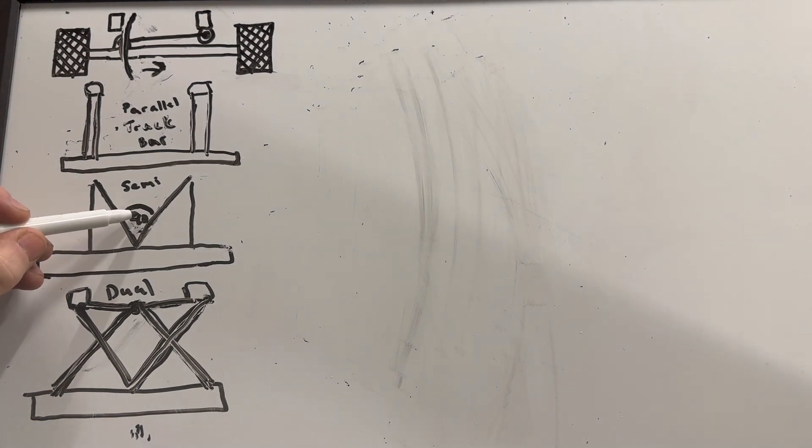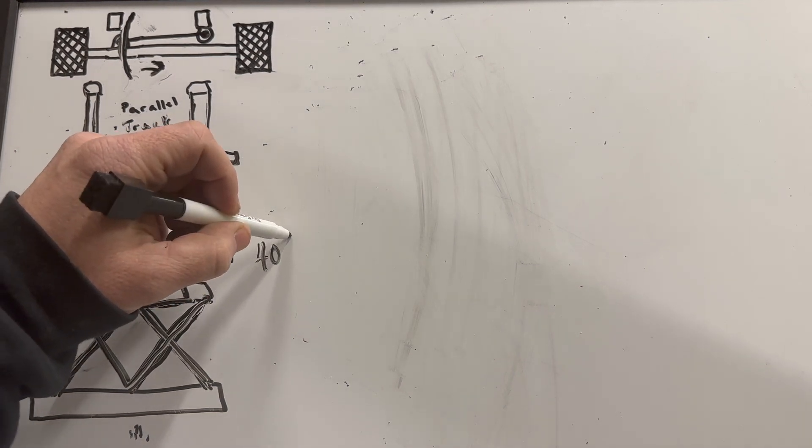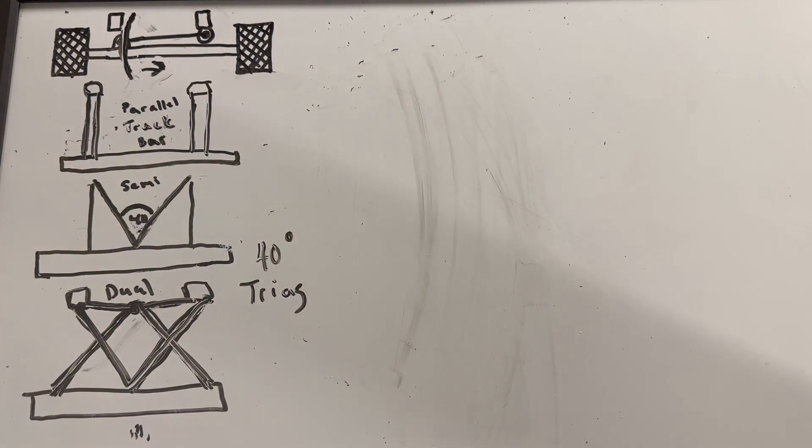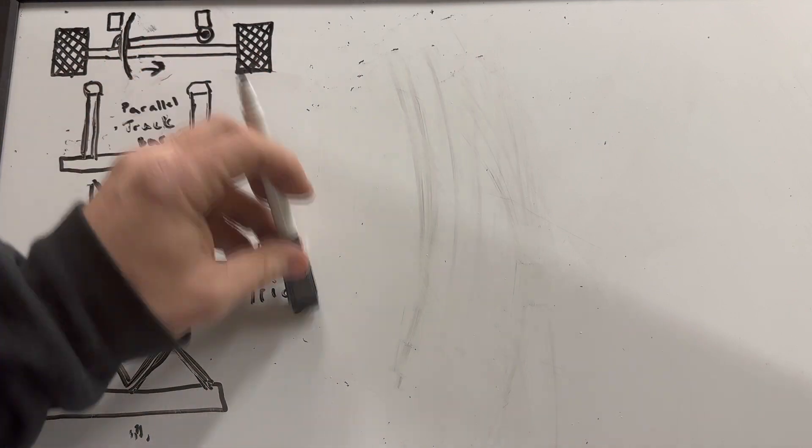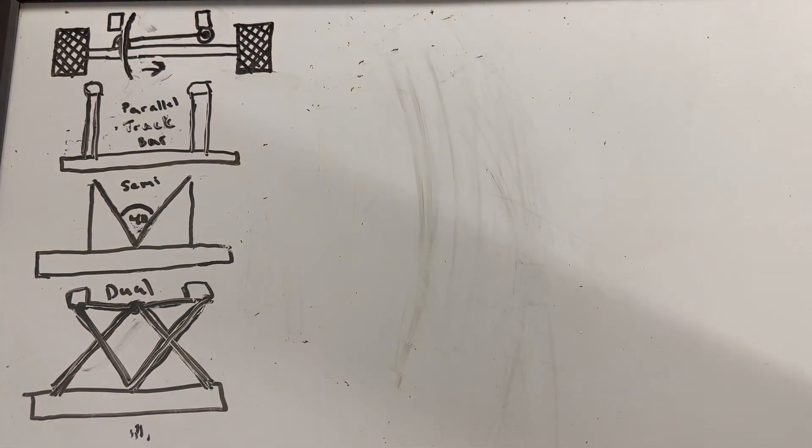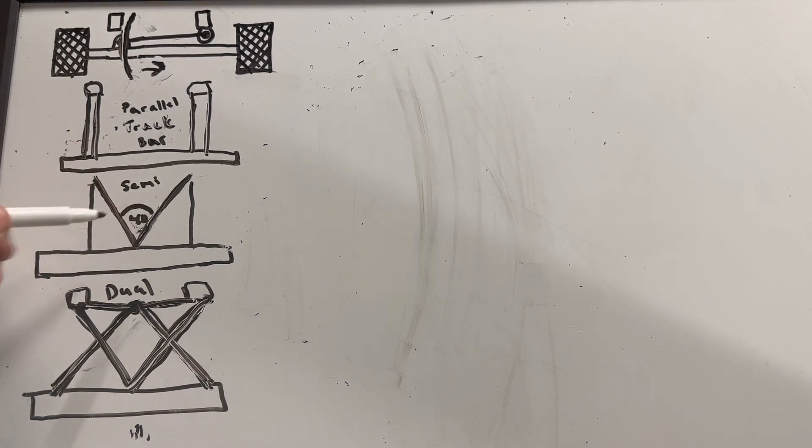You need to have 40 degrees, right? Put it here, 40 degrees minimum triangulation. That's how it's always explained and it's kind of confusing, right? Like where is that, where's the 40 degrees?